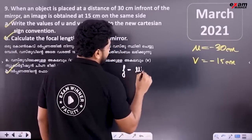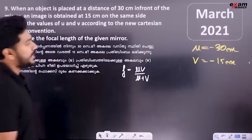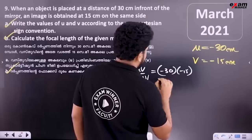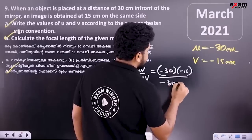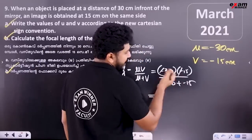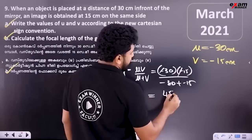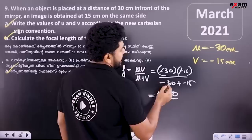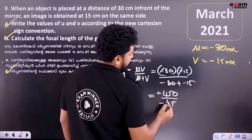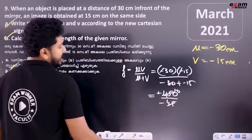In our equation, F is equal to uv by u plus v. Also, 1 by F is equal to 1 by u plus 1 by v. U is minus 30, so minus 30 plus minus gives the denominator. Substituting the values to find the focal length.